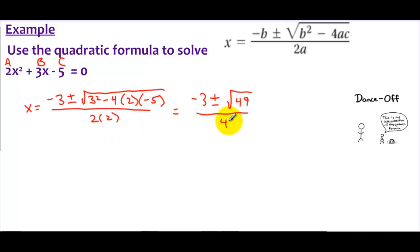This is nice because the square root of 49 is something we can simplify even further. We can say this is the same as negative 3 plus or minus—the square root of 49 is 7—all over 4. So now we're at the step where we've simplified the radical as much as we could, and now we're going to split this up into two problems.